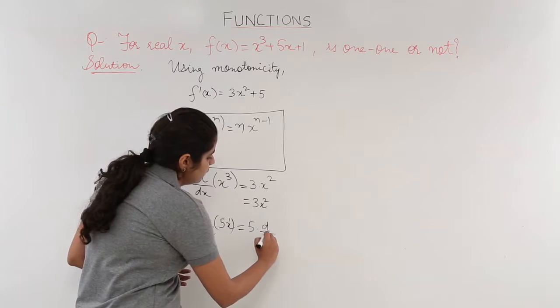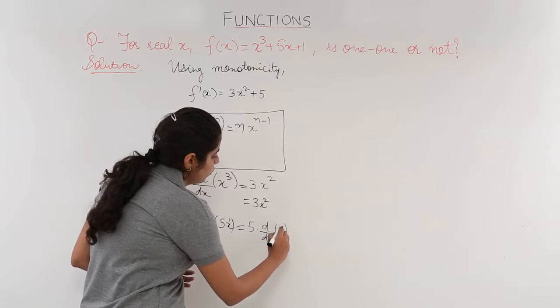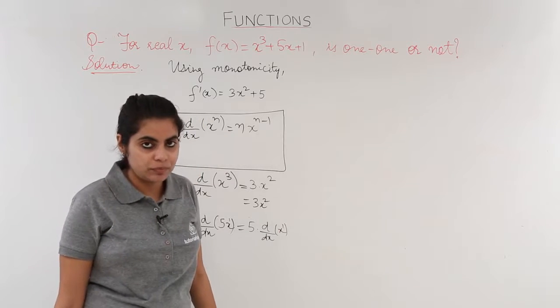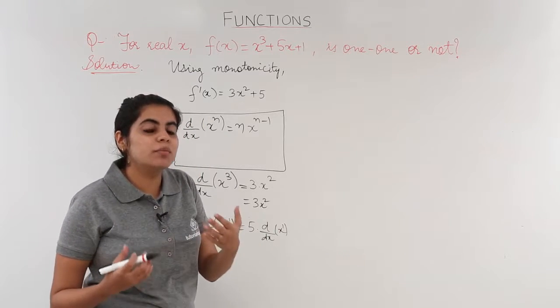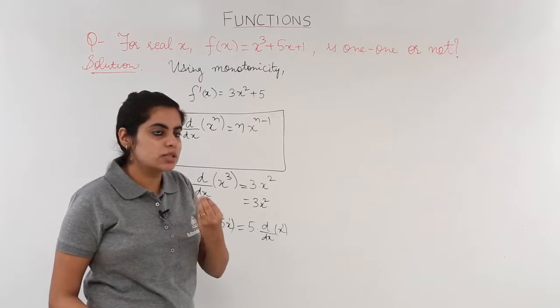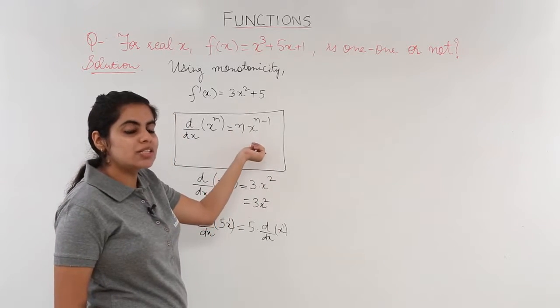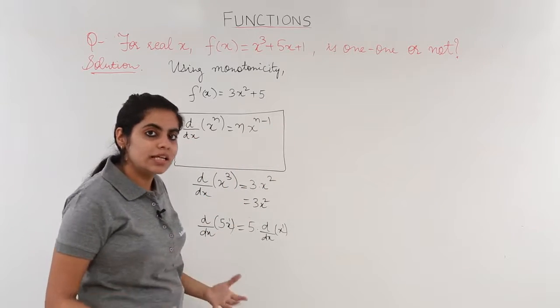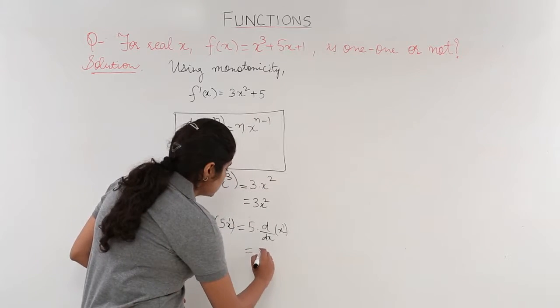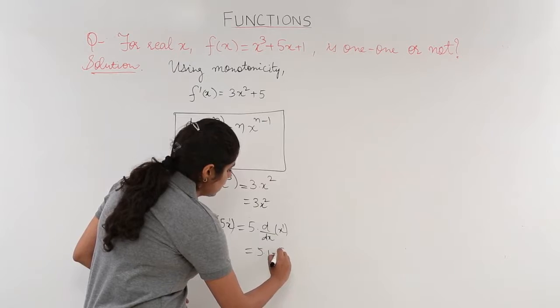What we are left with? We are left with the differentiation of only x^1. Now x^1 means the n value is 1. You take out 1 in the front. 1 times x^0 is nothing but 1. So it becomes only 5 times 1 which is 5.